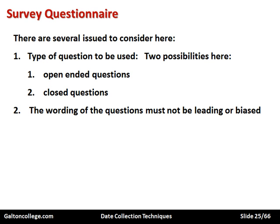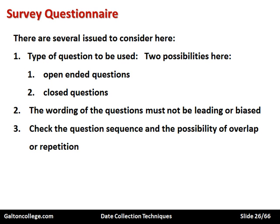The wording of questions must not lead to bias. It's very easy to word questions which lead the respondent in a particular way. For example, 'Don't you agree that the government is doing an excellent job?' — that's a biased question; the language is leading the respondent to agree. Leading questions are biased and should be avoided. For that reason, pre-testing is such a good idea. Pre-testing means ironing out questions that lead the respondent and introduce bias. Also check the question sequence and the possibility of overlap or repetition — it's very annoying when the same question comes up twice.